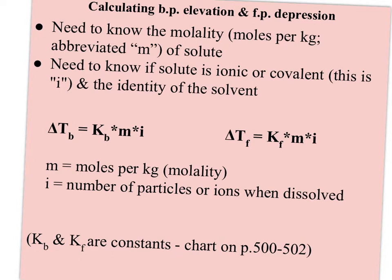To do that, you need to know several things. First, you need to know the molality, which is moles per kilogram, because that lets you know how much solute is in the solvent. More concentrated is going to have a bigger effect. You also need to know if the solute is ionic or covalent because that's going to affect how many particles ultimately end up dissolved. And you need to know the identity of the solvent because different solvents are affected differently.